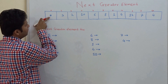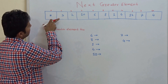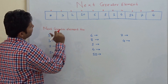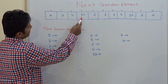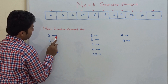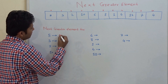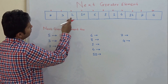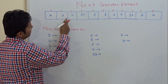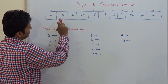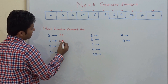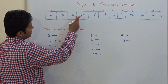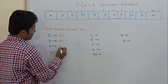For 5, what is the next greater element? 3 is less than 5, 2 is less than 5, and 10 is greater than 5. So for 5, 10 is the next greater element. For 3, 2 is less than 3, and 10 is greater than 3, so 10 is the next greater element. For 2, obviously 10 is the next greater element.